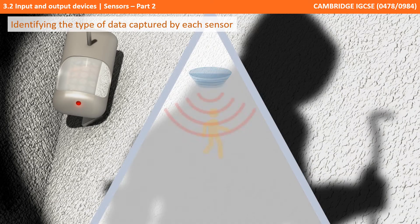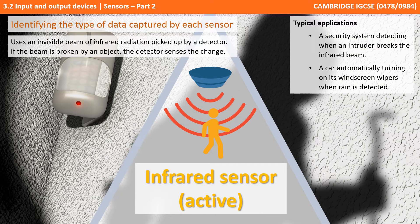Next we have infrared sensors, split into active and passive. With active infrared, there is an invisible beam of infrared radiation picked up by a detector. If the beam is broken by an object, the detector senses the drop in radiation levels. This is commonly used in security systems detecting when an intruder breaks the infrared beam, and it can be used in vehicles to automatically turn on windscreen wipers when rain is detected on the windscreen.